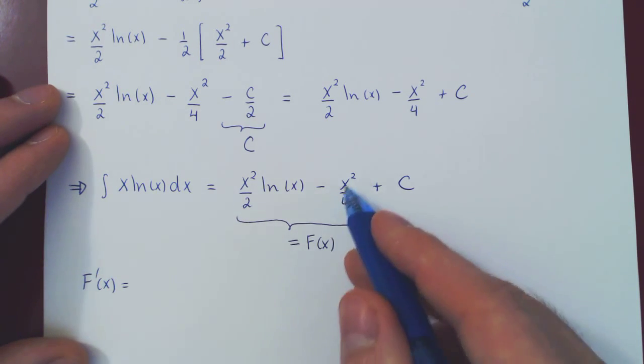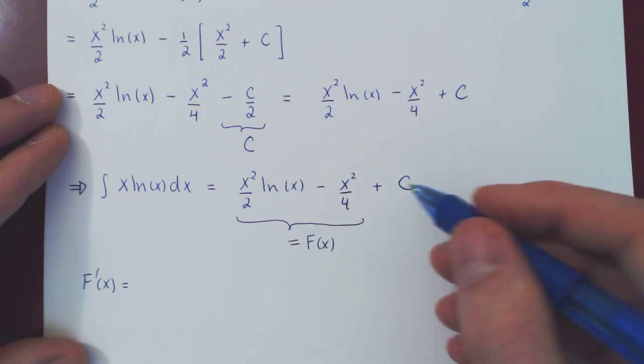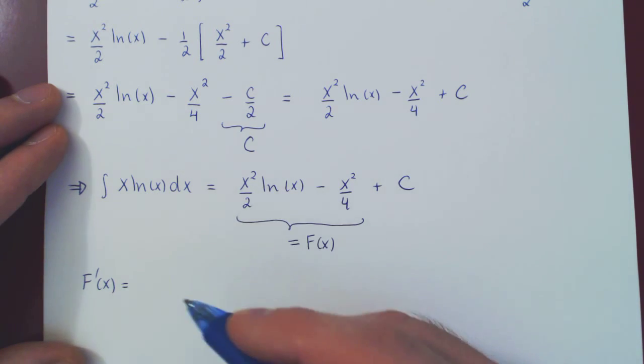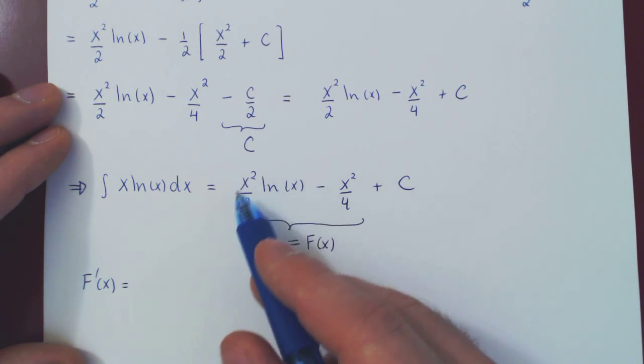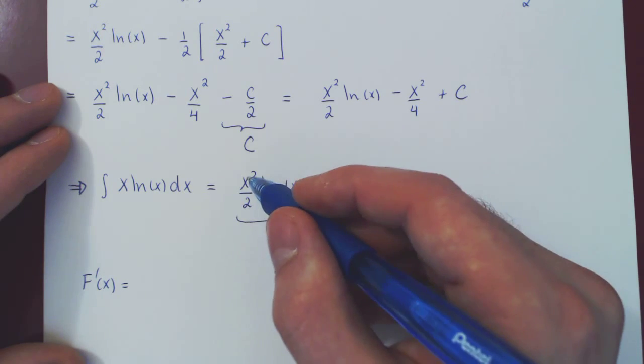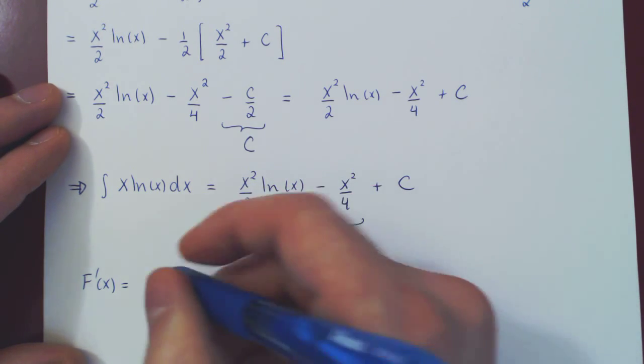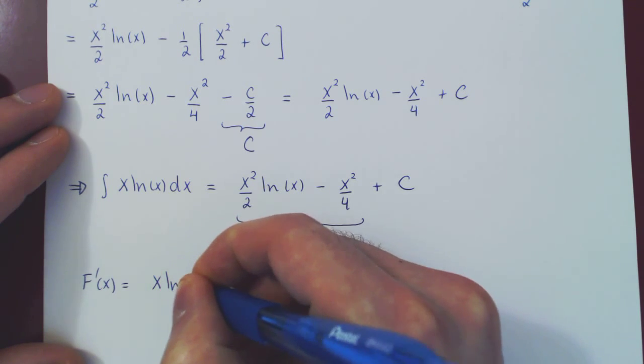And hopefully, the derivative of this function—and we can ignore c because the derivative of a constant is 0, so it gives you nothing—so if we differentiate this, we should get x ln of x. Well, we have a product rule here. So derivative of the first function, 2x over 2, is x. So it's x times ln of x.